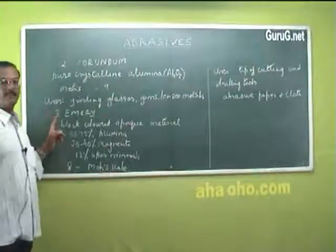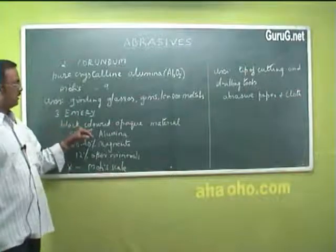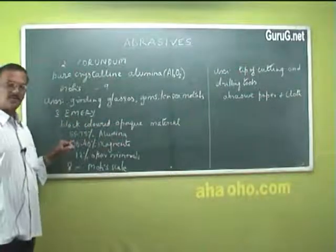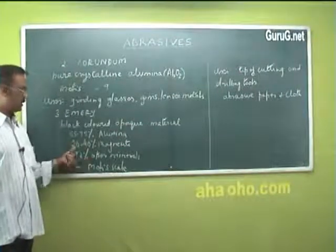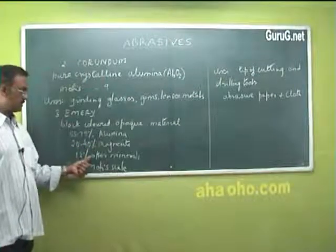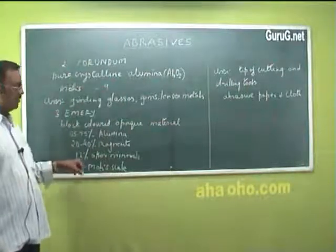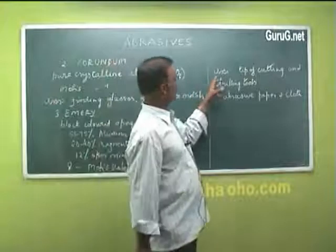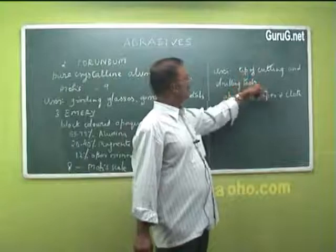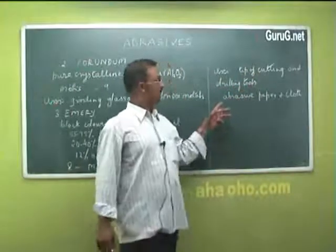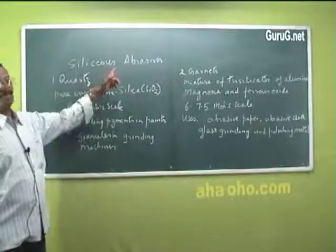The third non-siliceous abrasive is emery. It is a black-colored opaque material containing about 55–75% alumina, 20–40% magnetite, and about 12% other minerals. Its hardness is about 8 on the Mohs scale. Emery is used as the tip of cutting and drilling tools and also in abrasive paper and cloth.